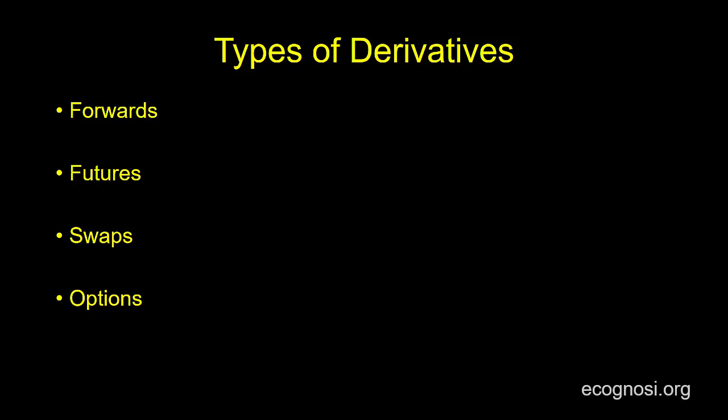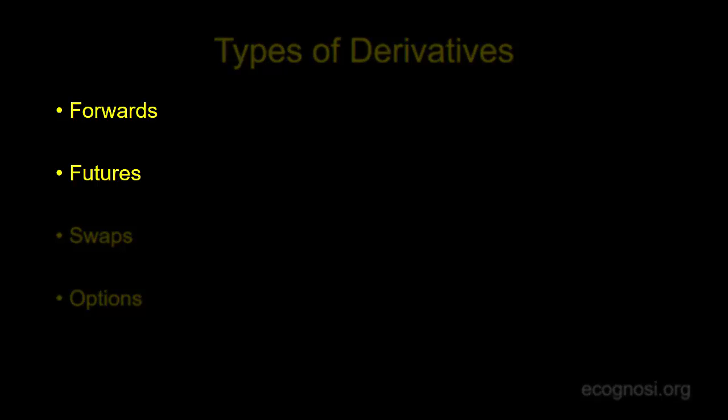After that note, let's start from the top two: forwards and futures. The reason I mention them together is because although these two do have some differences, they are conceptually the same thing. They are just contracts for delayed delivery — for delivery of an asset, say gold for example, in the future.